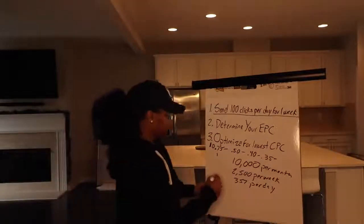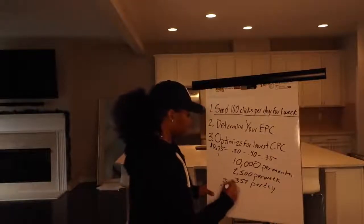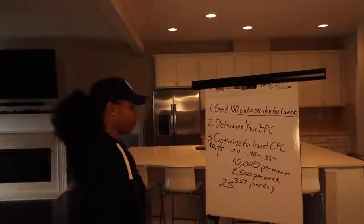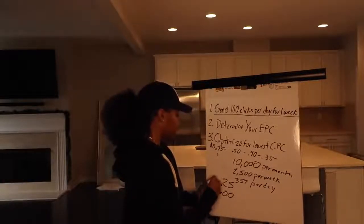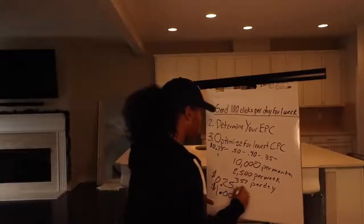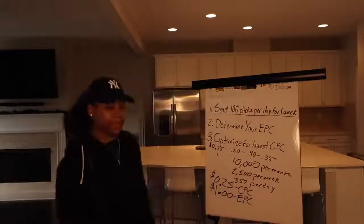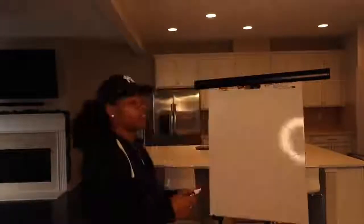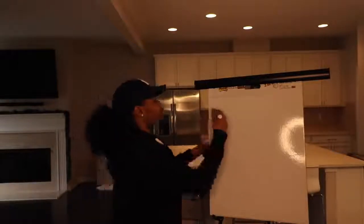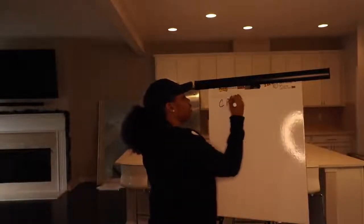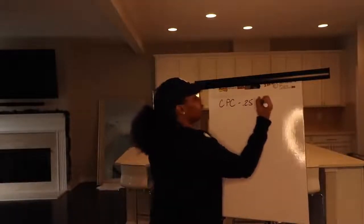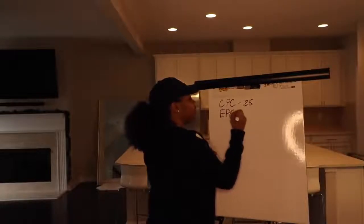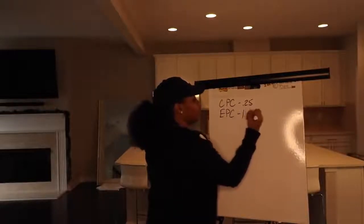Now let's say these clicks are costing you $0.25, and let's also say your EPC is $1.00. So we have the CPC optimized down to about $0.25 and we have our EPC at $1.00.